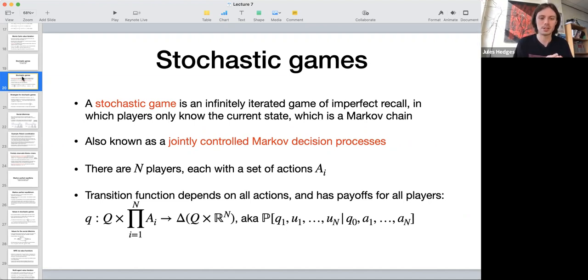It's a Markov decision process where the actions aren't completely controlled by one agent, but are jointly controlled by multiple agents with potentially different objectives.